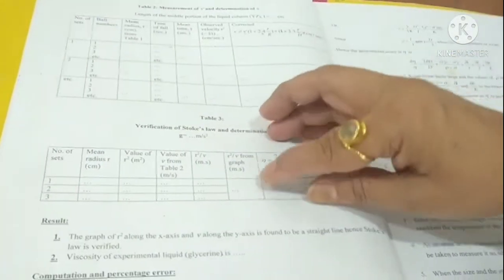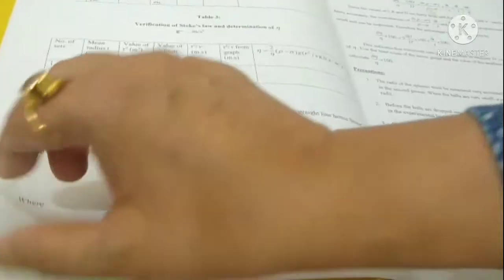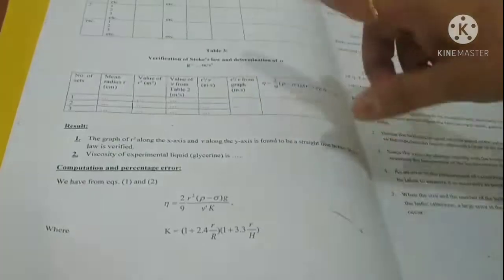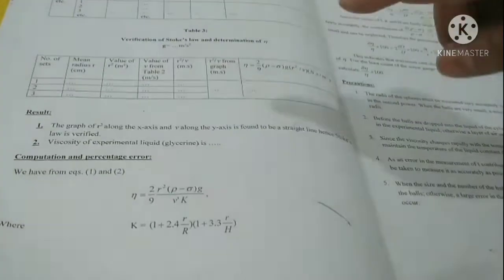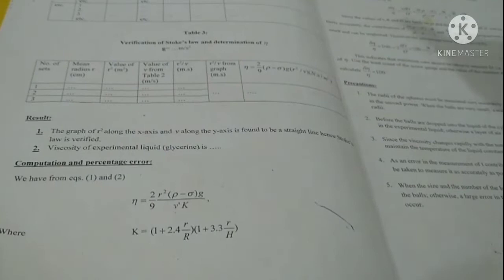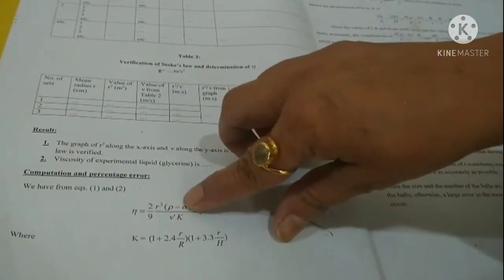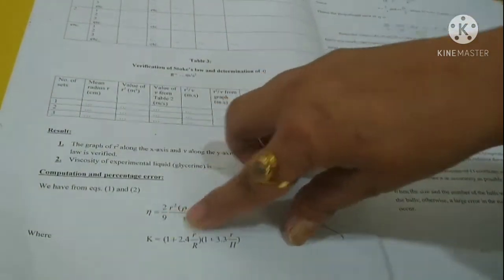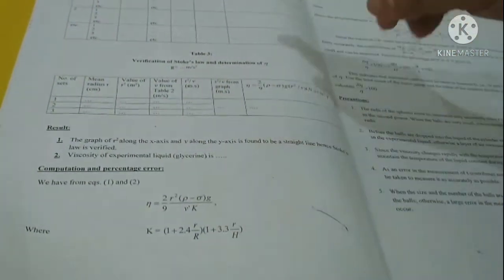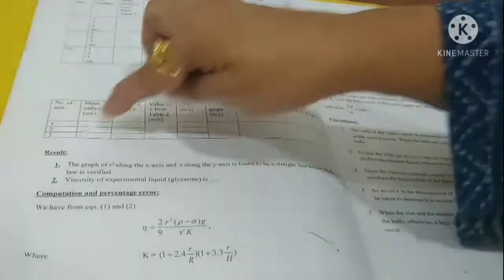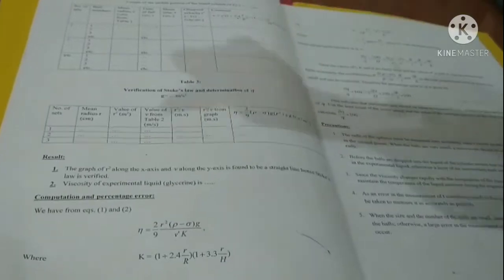We found that this R square V graph comes out to be a straight line which proves that Stokes law is verified. Because from the formula of Stokes eta, eta is equal to 2 by 9 R square (rho minus sigma) g upon V. Because these all are constant, R square upon V comes out to be constant. It means that it is a straight line, which means it is verified.